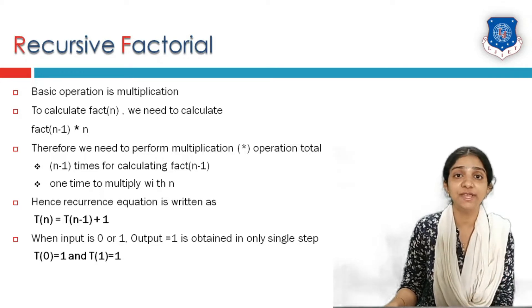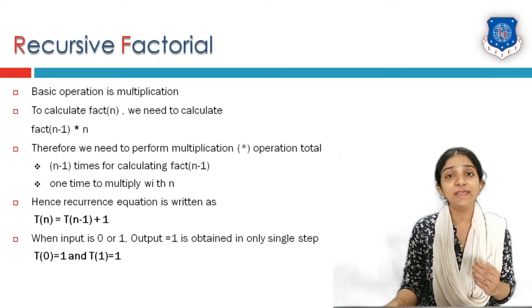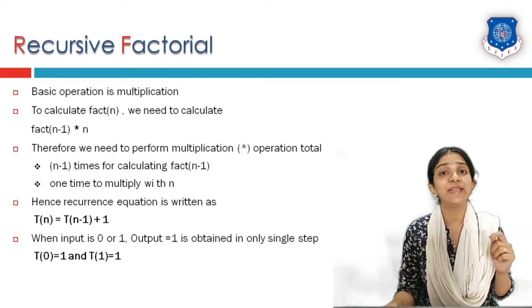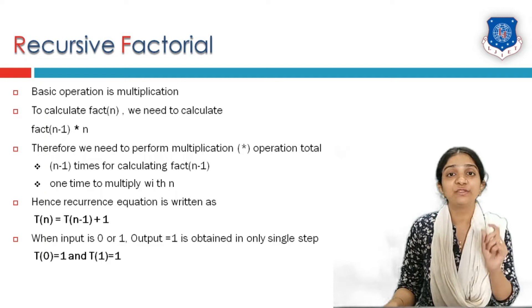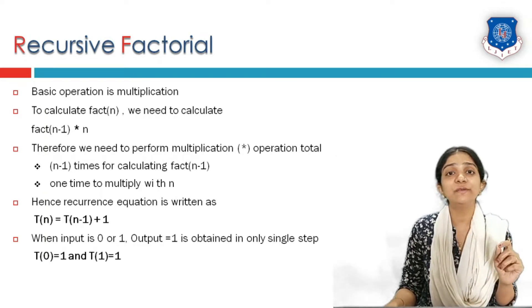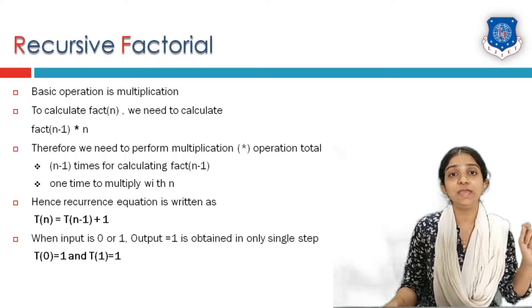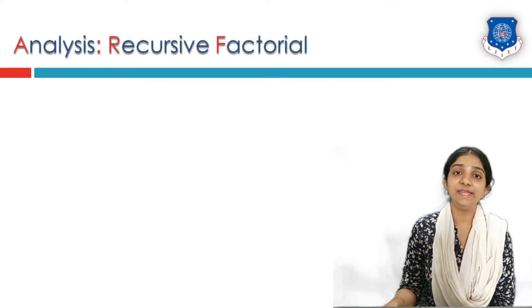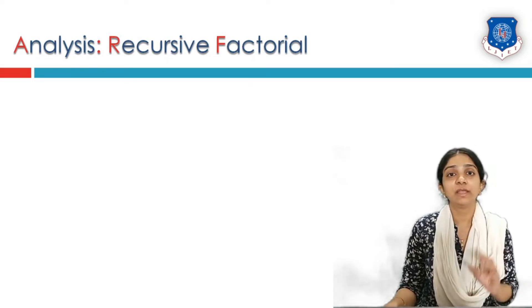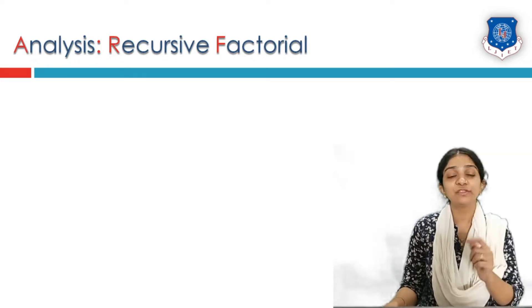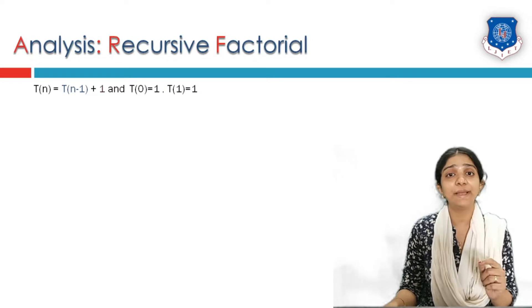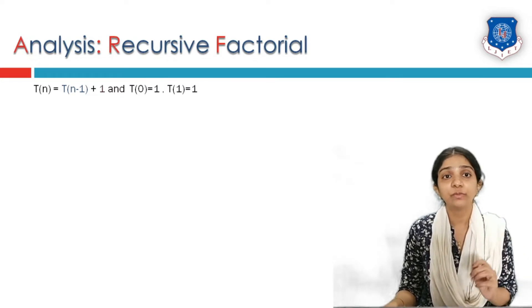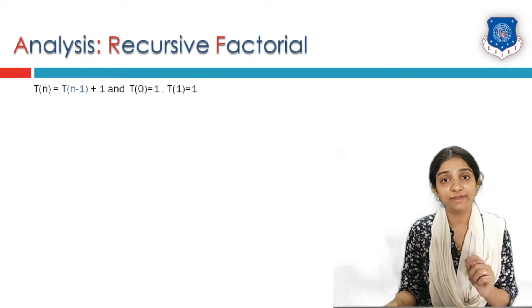Now for the base case: when n is less than 2, meaning n is 0 or n is 1, we directly calculate our answer as 1 and return that value, so only one step is required. That is why T(0) and T(1) are equal to 1. So the recurrence relation is T(n) = T(n-1) + 1 for n greater than 2, and T(0) = T(1) = 1.